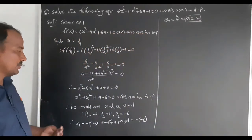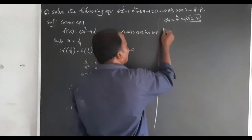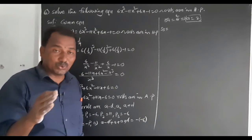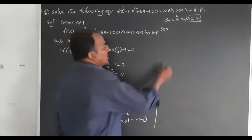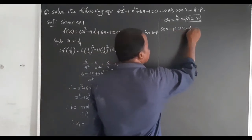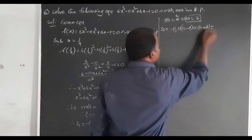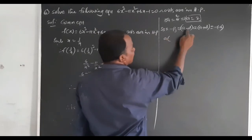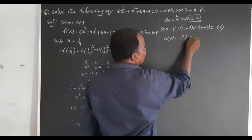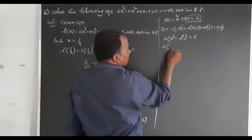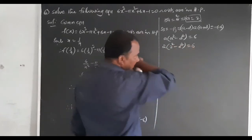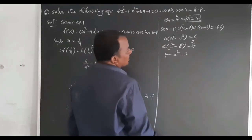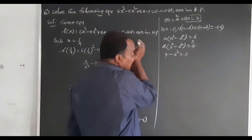Next, find the product of the roots. S3 — product of roots: (a minus d) times a times (a plus d) equals minus P3 equals 6. This gives a times (a square minus d square) equals 6. Substituting a equals 2: 2 times (4 minus d square) equals 6, so 4 minus d square equals 3.